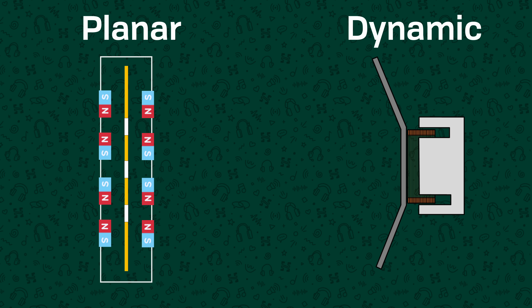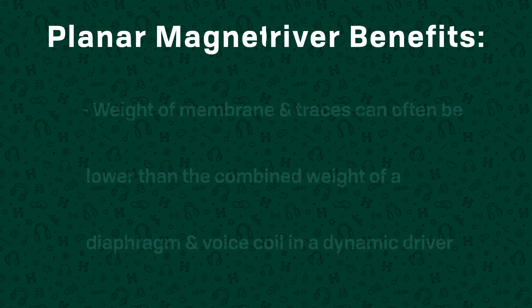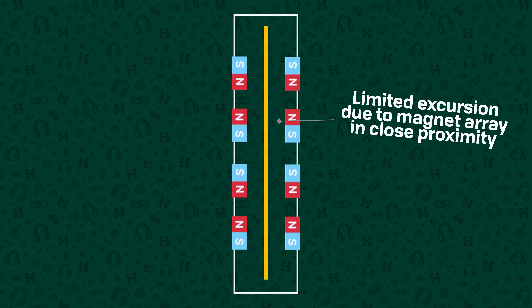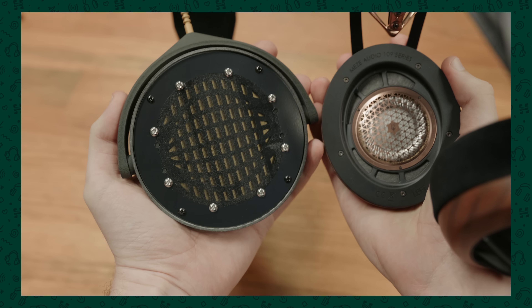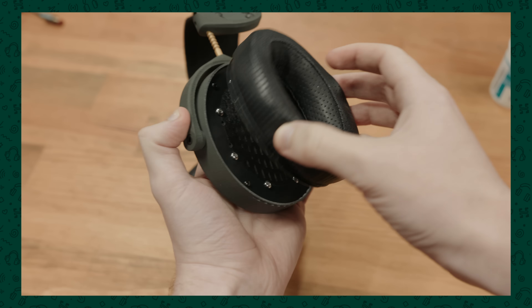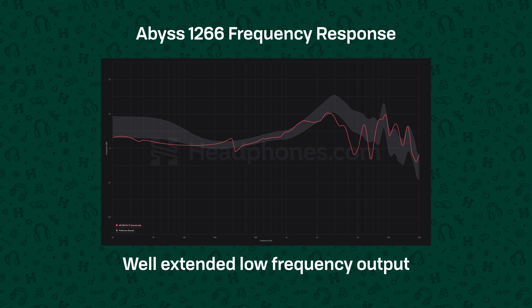Planar magnetic drivers have some potential advantages and disadvantages versus dynamic drivers. Since the overall mass of a couple micron-thin sheet of material and ultra-thin traces is likely going to be a lot less than the rigid material cone and relatively heavy coil of wire in a dynamic driver, they can have a lower mass for the moving parts and this can potentially allow for lower distortion and higher frequency capability. Whilst they need to be fairly close to the magnet structures and therefore can't usually move as much as some dynamic drivers will, their larger surface area compensates for this and they can still move a lot of air. This combined with a small completely sealed volume between the driver and ear, called the front volume, usually means they can achieve exceptionally flat, well-extended sub-bass performance.